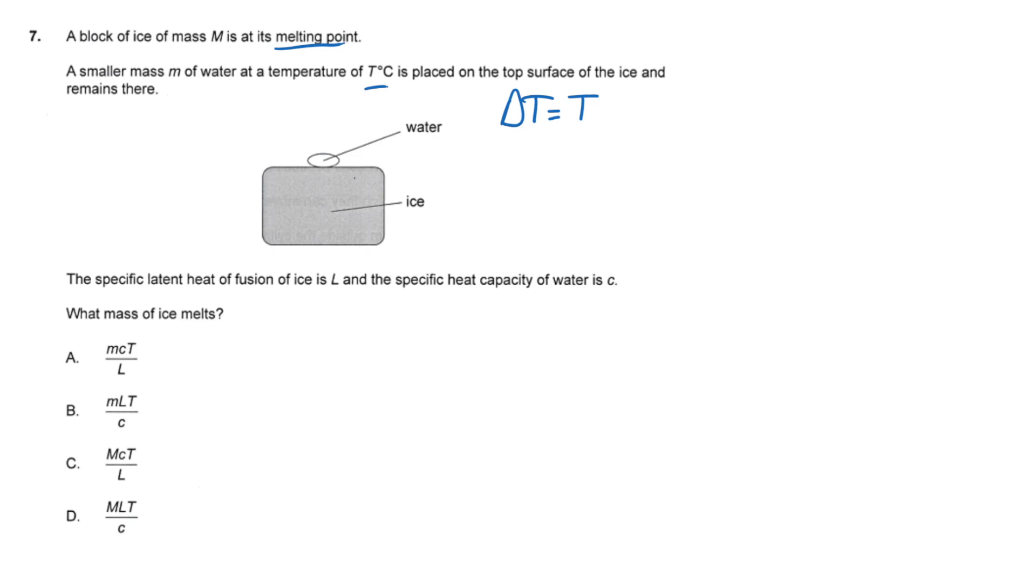Now, as the water cools, it's going to lose heat. And the heat loss is given by the equation Q equals mc delta T, which is commonly called MCAT. Now delta T is T, so we have mc times T.